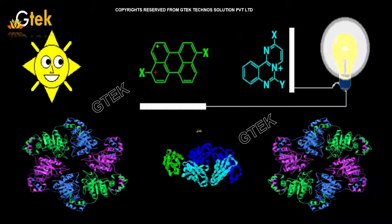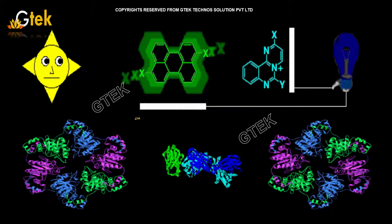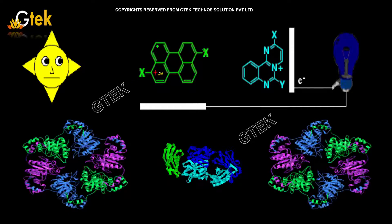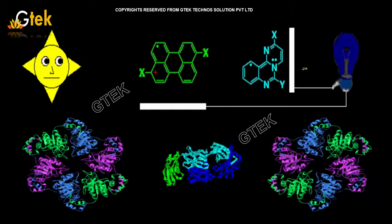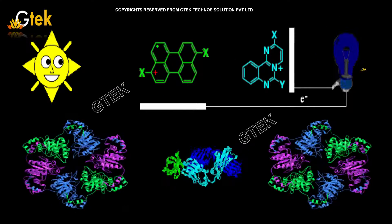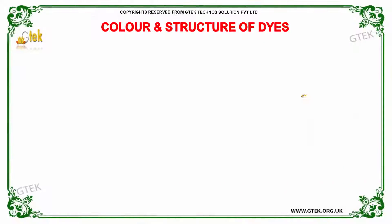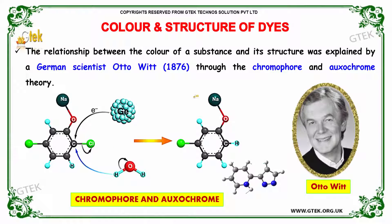These are the general structure on how the dye system works. On sunlight, this dye brings about different variations in colors. The relationship between the color of a substance and its structure was explained by a German scientist Otto Witt in the year 1876 through the chromophore and oxochrome theory.